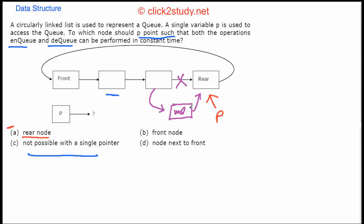To update the pointer, you need to follow next pointers all the way around the list until you reach the node before rear. That means you have to access the complete list — it's linear time, not constant time. So P pointing to rear is not possible.